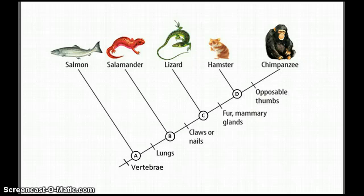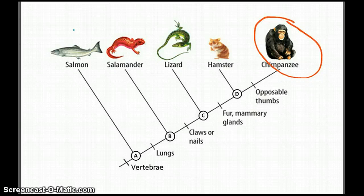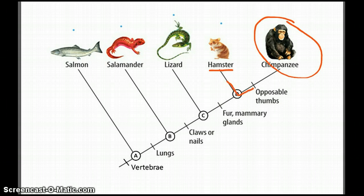Let's look at the chimpanzee. If we were to ask which of these organisms is most closely related to the chimpanzee, or which of these have the most recent common ancestors, we would have to say that it is the hamster. The reason is that they converge at a closer point than any of these other organisms.